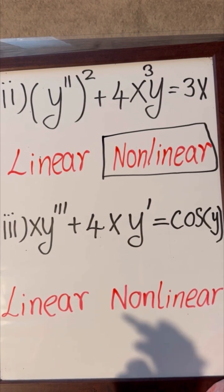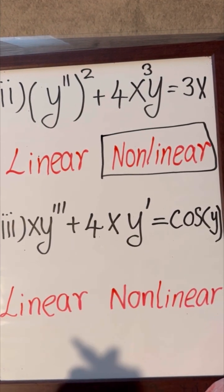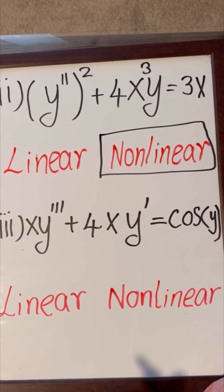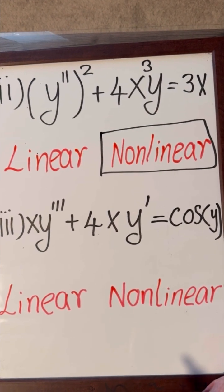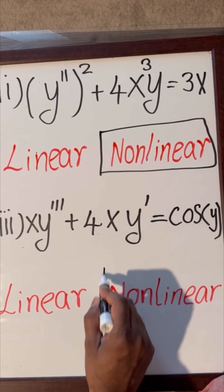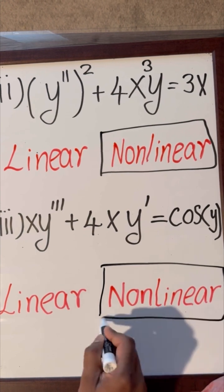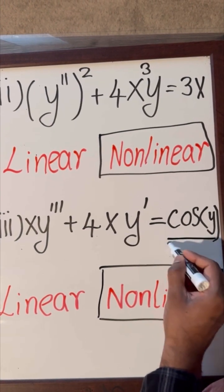Let's consider the third example. 4xy triple prime plus 4xy prime equals cosine y. This is also a nonlinear differential equation because of this cosine y term.